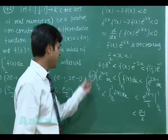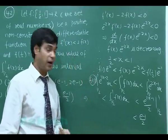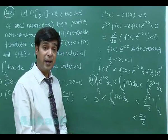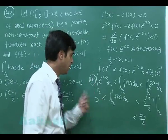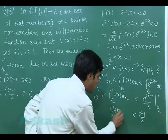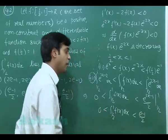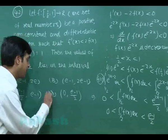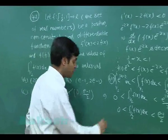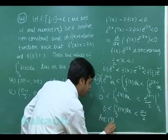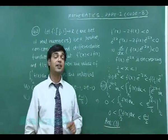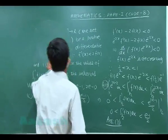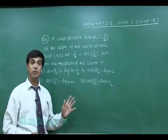Since f is a positive function, the integral is clearly greater than 0. Therefore the integral from 1/2 to 1 of f(x) dx lies in the interval (0, (e−1)/2), which corresponds to option D. The correct answer for question 42 is option D.